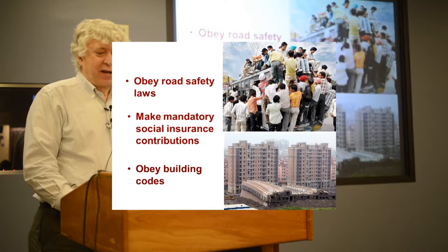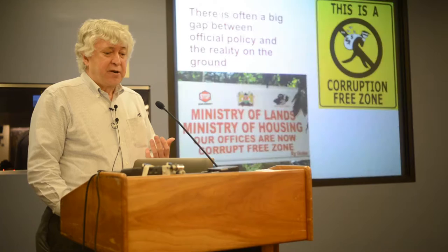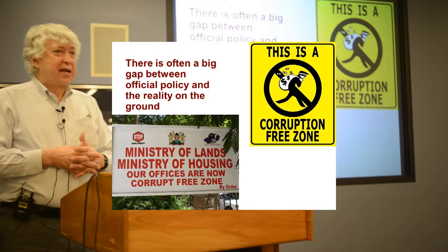Obeying building codes so that buildings do not topple over — this is a case in China. Obeying quality control rules in food production, especially in dairy production. Many of you are familiar with the Sanlu and the broader tainted milk scandal in China in 2008. Obeying child labor laws. Oftentimes there is a big gap between official policy and the reality on the ground.